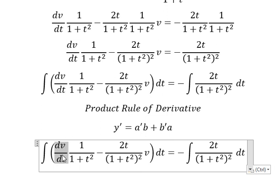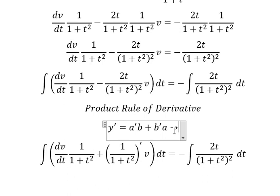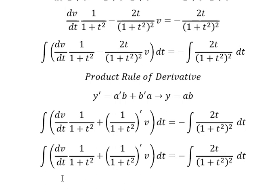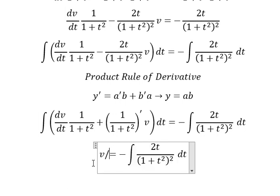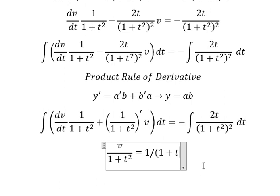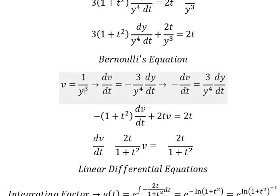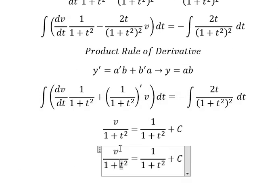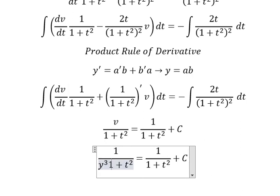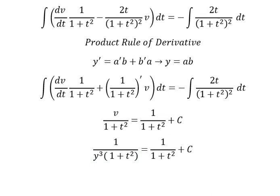We have the first derivative of A multiplied by B, and the first derivative of B multiplied by A. So the integral gives us Y equals AB, which means V over 1 plus t squared. The integral of the right side gives us 1 over 1 plus t squared, plus the constant C. Substituting back for V, that is 1 over y to the power of 3. This is the final answer. Thank you for watching.